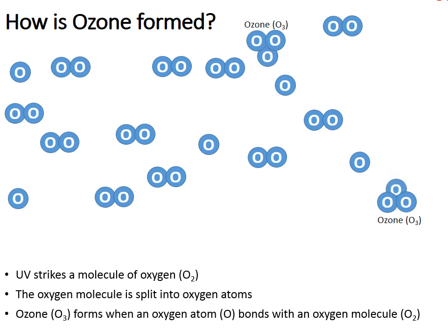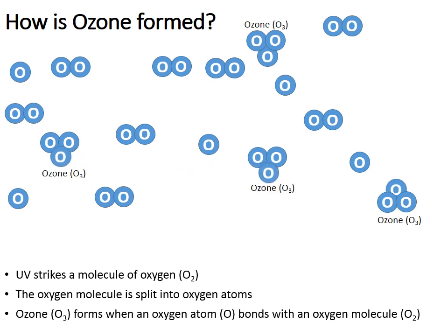Here comes an incoming photon of UV light, which strikes an O2 molecule. That causes the O2 molecule to be broken apart, forming O3. Incoming UV breaks apart an O2, forming O3. This has been happening for millions and millions of years in our atmosphere.